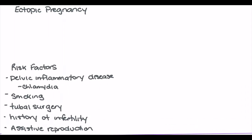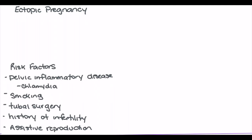In terms of development of ectopic pregnancy, a number of risk factors exist. These include pelvic inflammatory disease — primarily chlamydia is the most common factor leading to ectopic pregnancy — smoking, tubal surgery, and history of infertility, specifically with the use of assistive reproduction such as in vitro fertilization and drugs that induce superovulation.